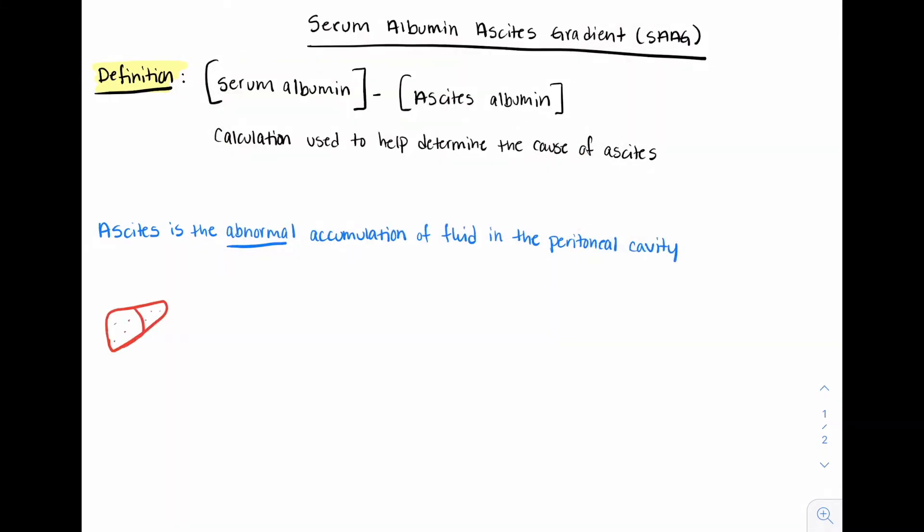Specifically, it is defined as greater than 25 ml of fluid. Ascites is made up of proteins such as albumin, cells such as red blood cells and white blood cells, glucose, etc.